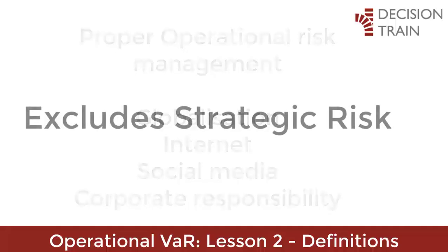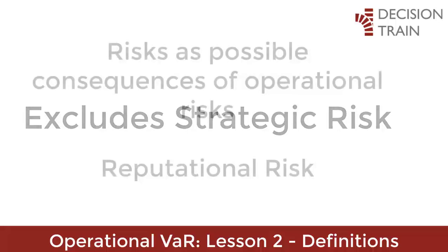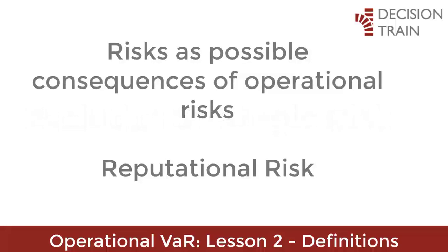The Basel 2 definition of operational risk excludes, for example, strategic risk — the risk of a loss arising from a poor strategic business decision. Other types of risk are considered as possible consequences of operational risk events. For example, reputational risk, which consists of damage to an organization through loss of reputation or prestige, may arise as a consequence or impact of operational failures, as well as other events.